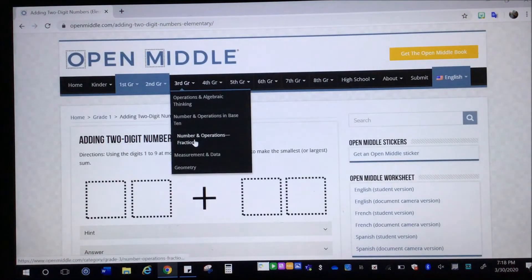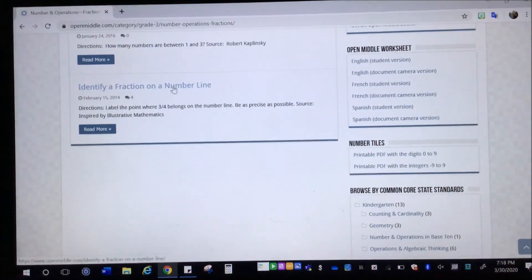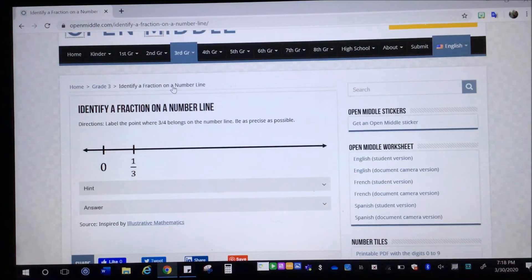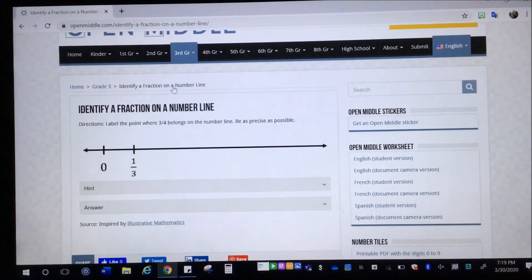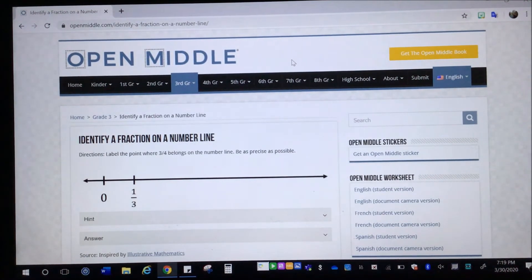Let's see. For third grade, I'll show some fractions. Fractions start appearing in third grade. So there's only two since you're really just beginning fraction work in third grade. But this one, identify a fraction on the number line. Directions, label the point where three-fourths belongs on the number line. Be as precise as possible. So again, you could just copy that number line down on a piece of paper and solve it. So there's all sorts. If you can check out the grade you're currently in or parents or teachers, check out the grade of the students who you're working with.